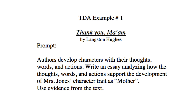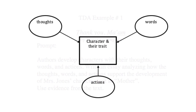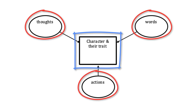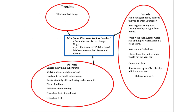Text dependent analysis, Example number one. Authors develop characters with their thoughts, words, and actions. Write an essay analyzing how the thoughts, words, and actions support the development of Mrs. Jones' character trait as mother. Use evidence from the text. This is what the prompt might look like symbolically: Mrs. Jones' character trait as mother is the first reading element, and her thoughts, words, and actions is the second reading element. The prompt asks for a detailed examination of these two elements to uncover interrelationships in order to draw a conclusion about the author's message.